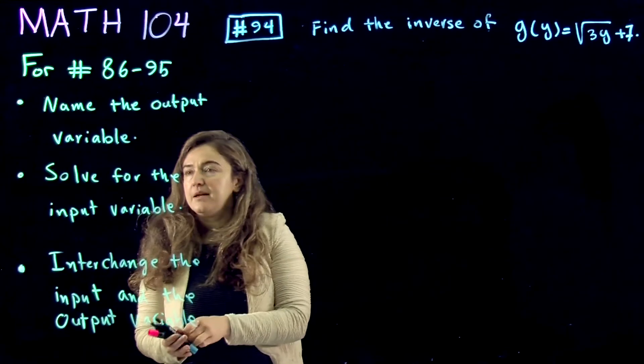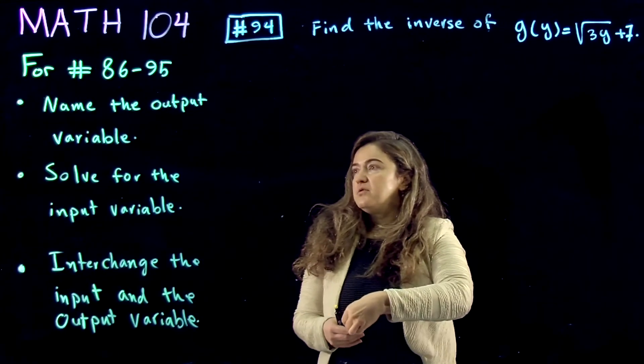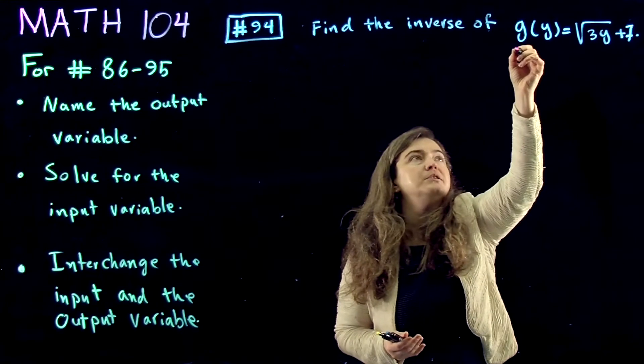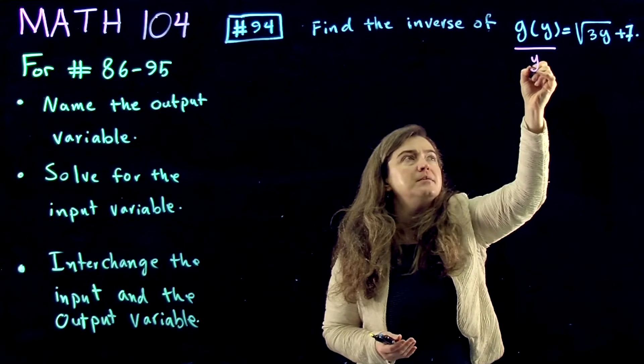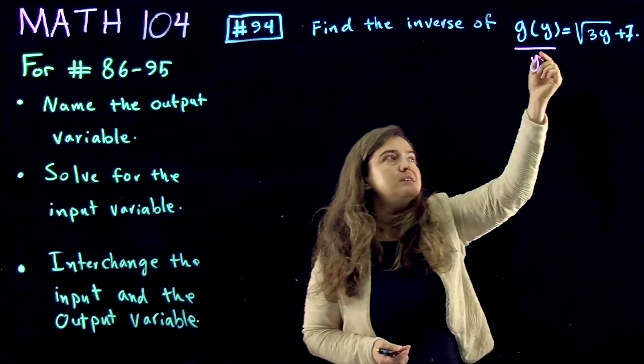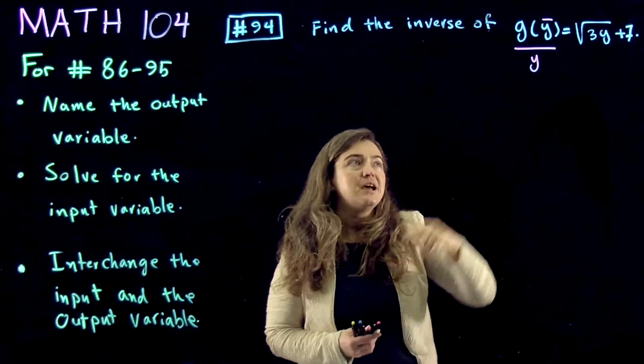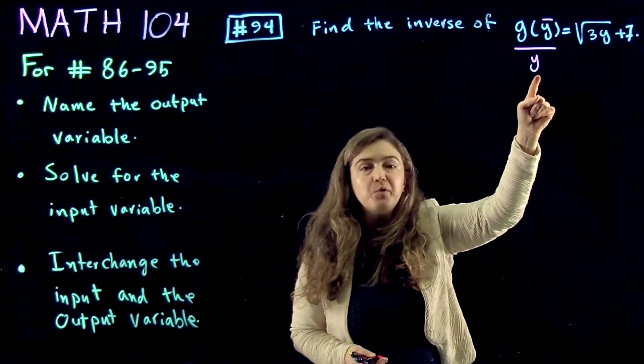The first step as usual is to find the output and rename the output. I'm going to rename the output y and check the input. Oh, the input is also y, so that is not a valid name for output.